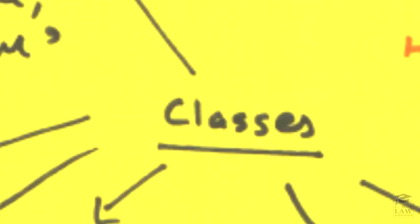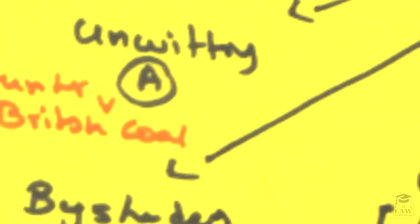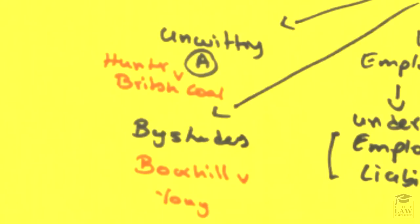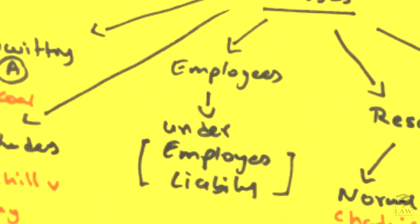There are several classes of people that could sustain, or court defines as can sustain, a psychiatric injury. One is the unwitting agent, as seen in Hunter v British Coal. Then you have bystanders, who most of the time or generally are not allowed to claim in tort for a psychiatric injury, such as Bourhill v Young. Employees also can be a class of people who suffer psychiatric injury, much like the unwitting agent in Hunter v British Coal, but it's looked at more or less under employers' liability.